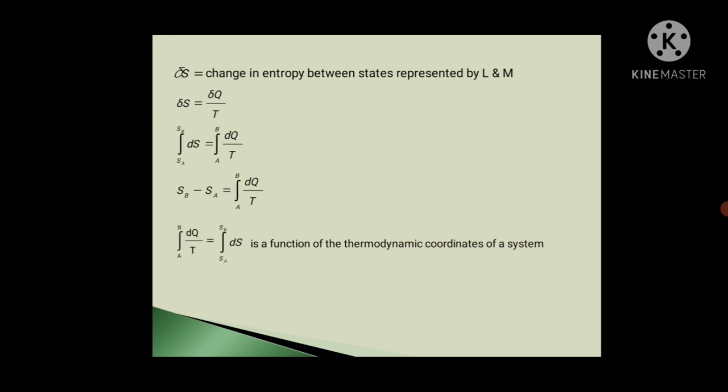So integration SA to SB dS equals integration A to B dQ upon T. Here SB minus SA, means change in entropy between B and A points, equals A to B integration dQ upon T.